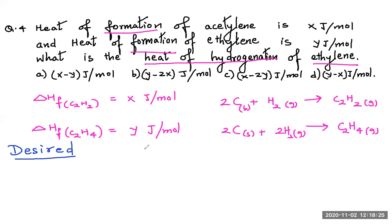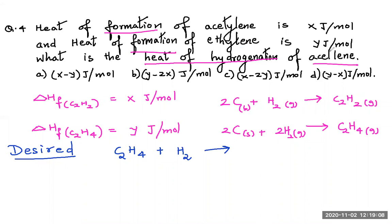The desired equation for hydrogenation of acetylene is: C2H2 gas + H2 gas gives C2H4 gas. C2H2 appears on the right side in equation one, but we need it on the left side, so we must reverse equation one. H2 appears in both equations so it cancels out when combining. C2H4 is in equation two on the right side with one mole as required, so we take equation two as it is.